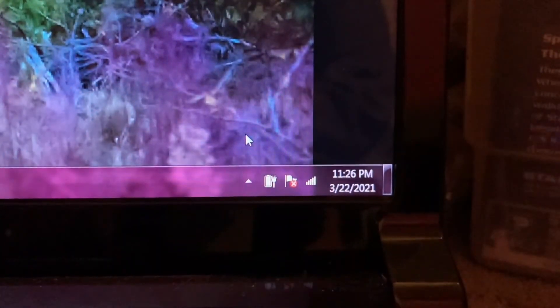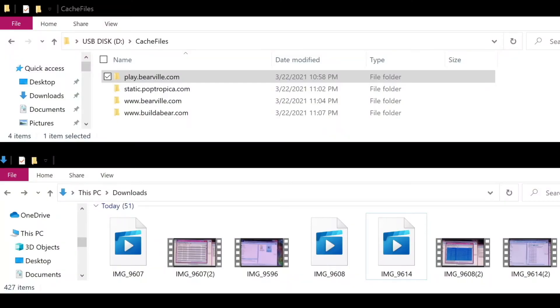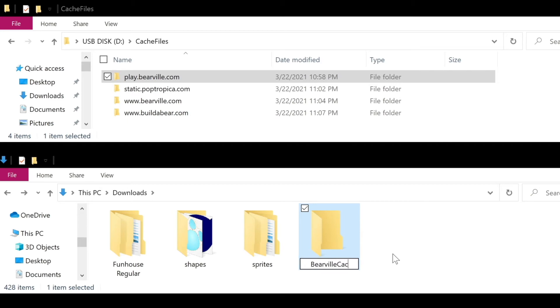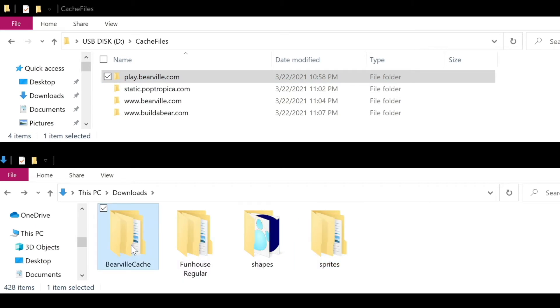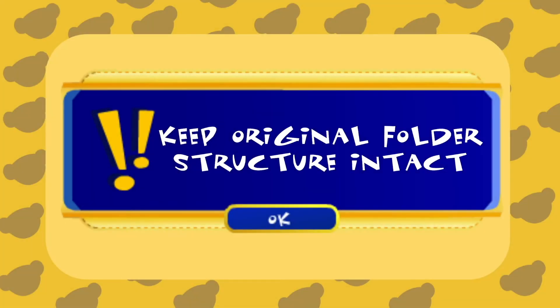When you're done exporting, safely remove your flash drive and return to your current computer. Next, we'll want to isolate the Bearville files we found and send them to the rewritten team to use. You won't want to send over every file you've exported from your cache, because some of them may contain sensitive information like names or addresses. However, Bearville files are only game assets and will not include any of this information, so we are safe to send them on their own. Make a new folder on your computer to store the found Bearville assets — I'll call mine BearvilleCache. Copy the entire play.bearville.com folder and/or the www.bearville.com folder from Cache Files into BearvilleCache. Do not alter the file structure of the assets you find or move any files around, as that structure is what allows the game to run as originally intended.